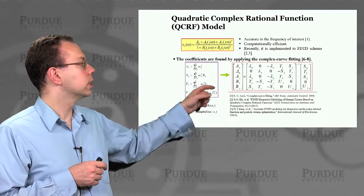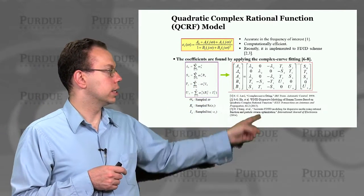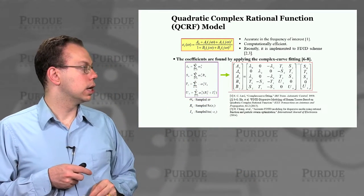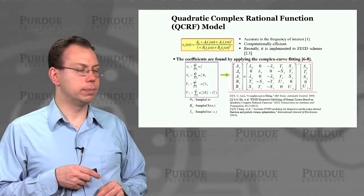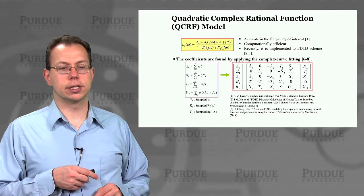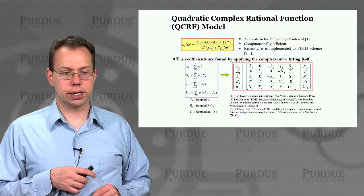This actually shows you can apply complex curve fitting in order to calculate all of the coefficients A0, A1, A2, B1, B2. It's essentially a five-by-five matrix problem. So assuming you have all the data, you can basically calculate certain quantities like S0, S1, T1, and U2.